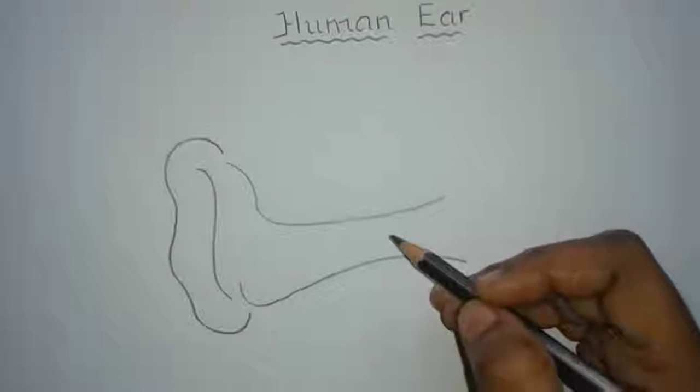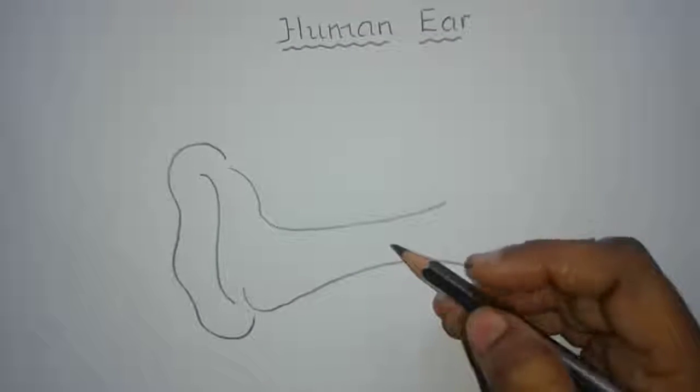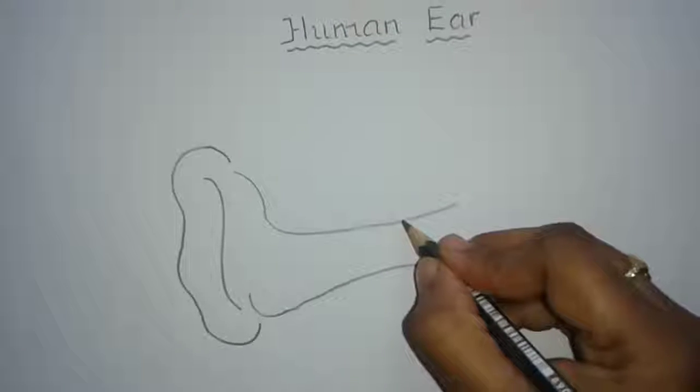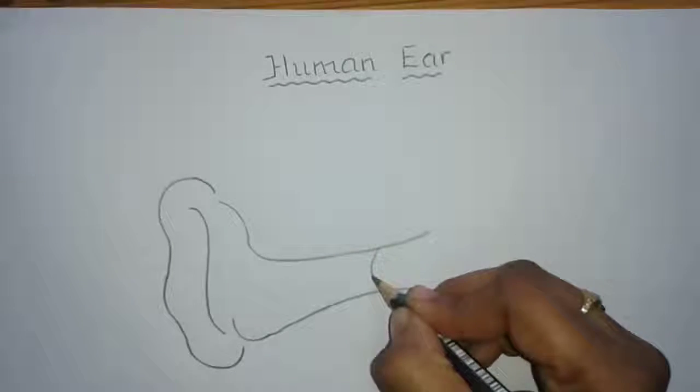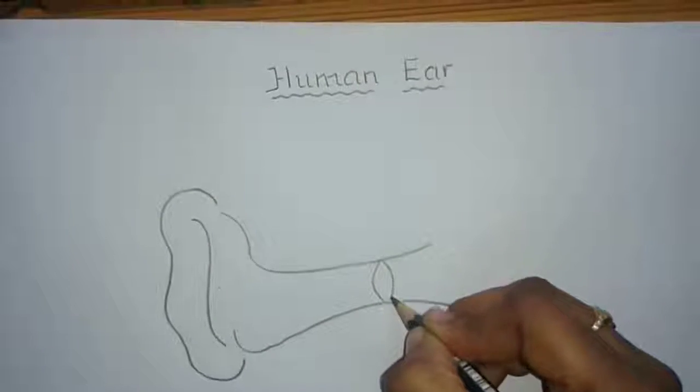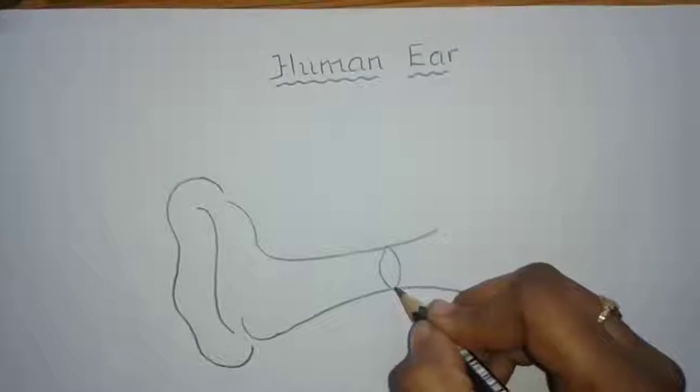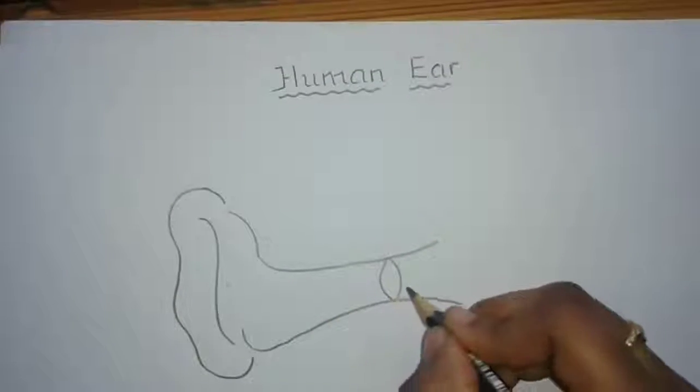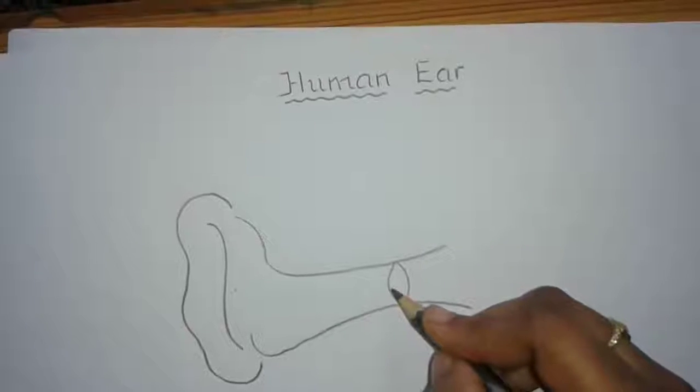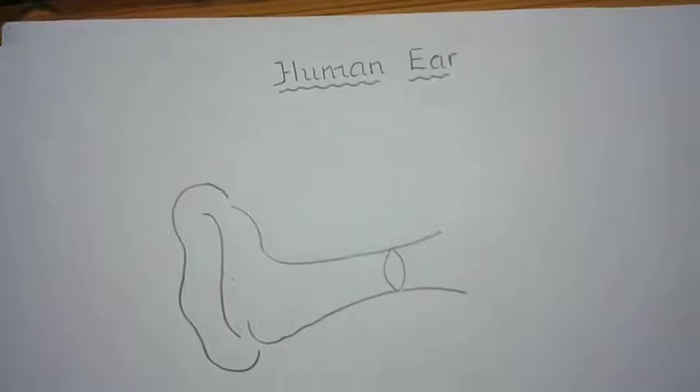Now draw the important part of the outer ear, that is the tympanum. That is also called eardrum. This tympanum separates external ear from middle ear and sound waves make tympanum vibrate.